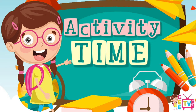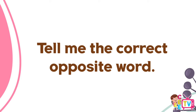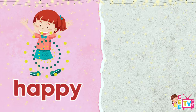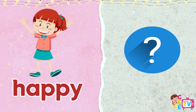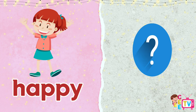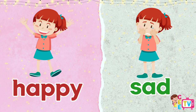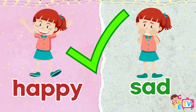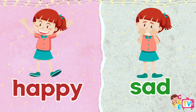Activity Time! Tell me the correct opposite word. What is the opposite of happy? The opposite of happy is sad. You are correct. The opposite of happy is sad.